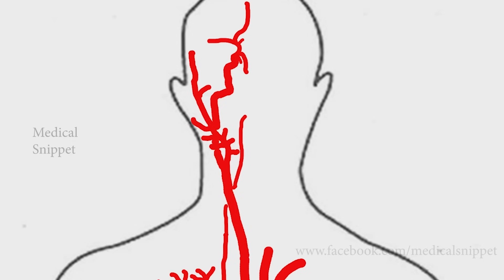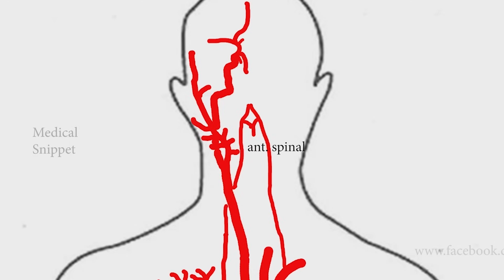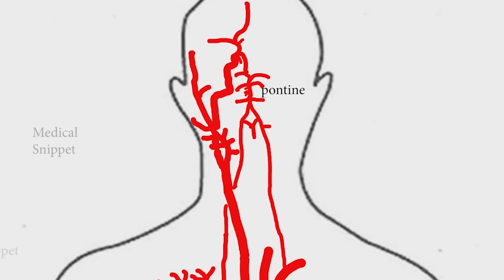Inside the skull, the two vertebral arteries join to form the basilar artery at the base of the pons. The basilar artery is the main blood supply to the brain stem and connects to the circle of Willis to potentially supply the rest of the brain if there is compromise to one of the carotids. The vertebral artery gives rise to the anterior spinal artery. The basilar artery gives rise to the anterior inferior cerebellar artery, the superior cerebellar artery, and divides into the posterior cerebral arteries. It also gives paramedian pontine branches.